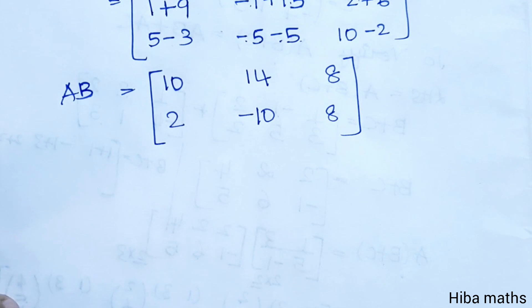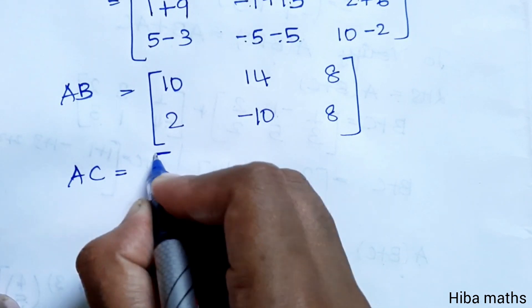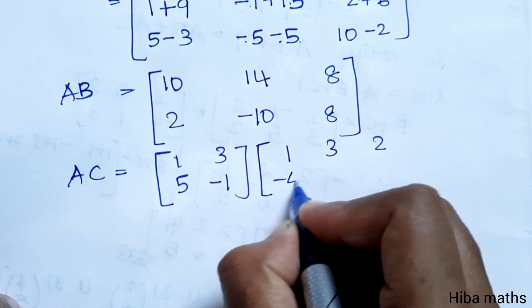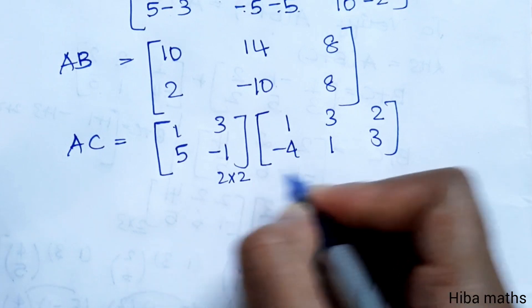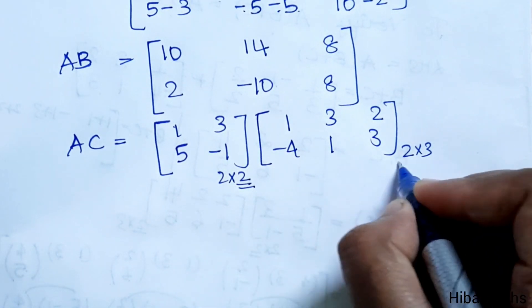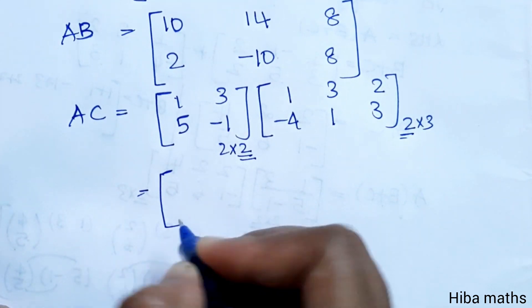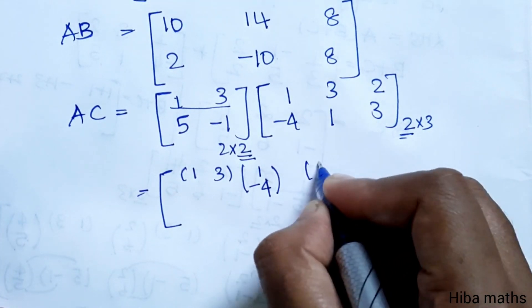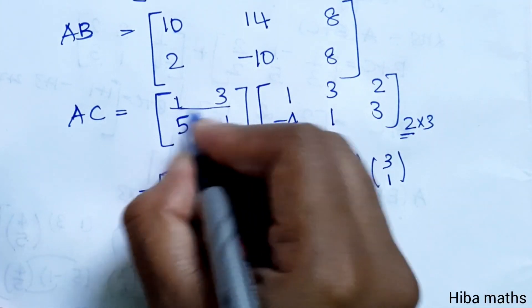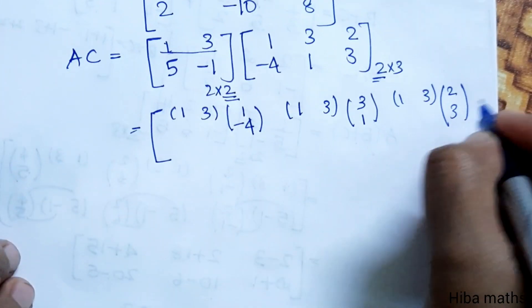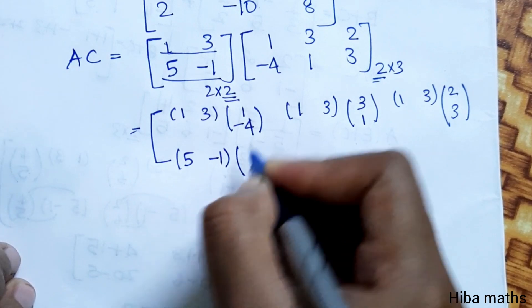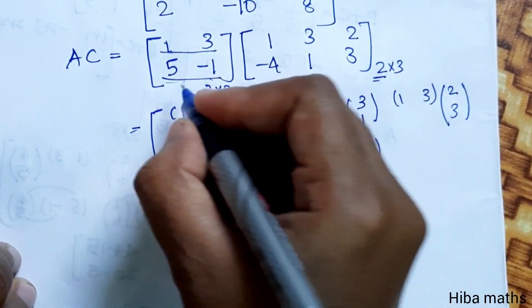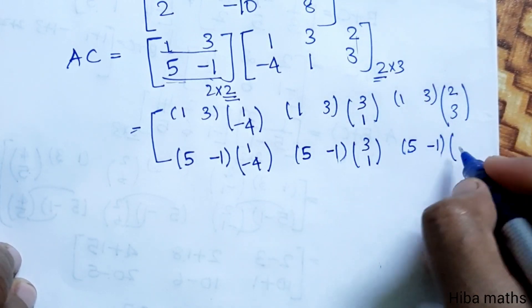Now we compute AC. A is [1,3;5,-1] and C is [1,3,2;-4,1,3]. First row of A is [1,3], second row is [5,-1]. First column of C is [1,-4], second column is [3,1], third column is [2,3]. Setting up: second row [5,-1] with first column [1,-4], second column [3,1], and third column [2,3].